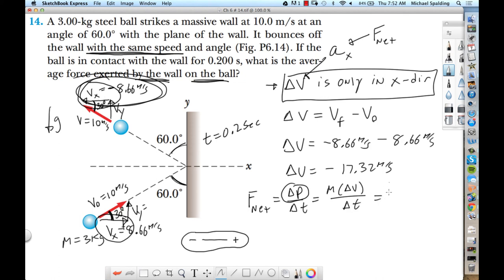So do we have the mass of the ball? Yes. The mass of the ball is three kilograms. The change of velocity is negative 17.32. And then the time is 0.2 seconds. So this comes out a net force wall on ball, negative 260 newtons.